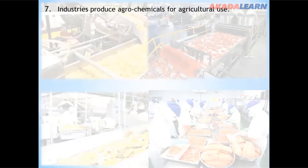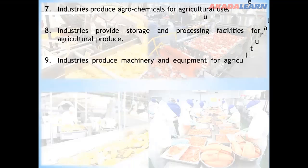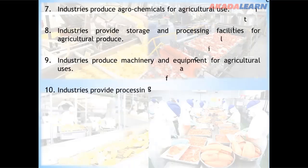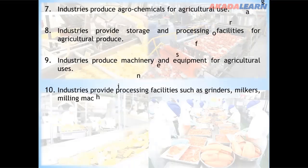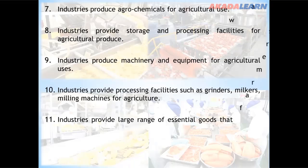Industries produce agrochemicals for agricultural use. Industries provide storage and processing facilities for agricultural produce. Industries produce machinery and equipment for agricultural uses, including processing facilities such as grinders, millers, and milling machines. Industries also provide a large range of essential goods that farmers want to buy.